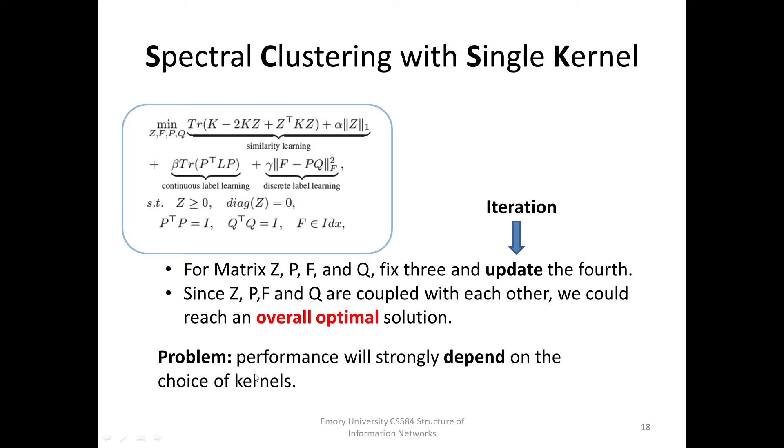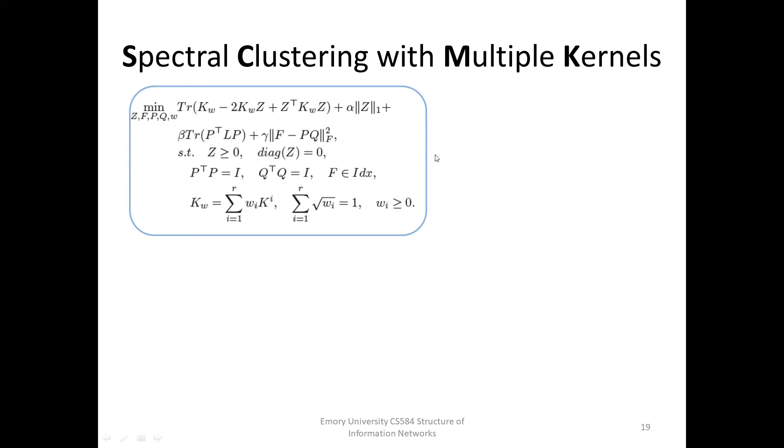However, the SCSK algorithm also has a drawback. Although the single-kernel model, SCSK, can automatically learn the similarity graph, matrix, and discrete cluster labels, its performance will strongly depend on the choice of kernels. This calls for the multi-kernel algorithm, SCMK.